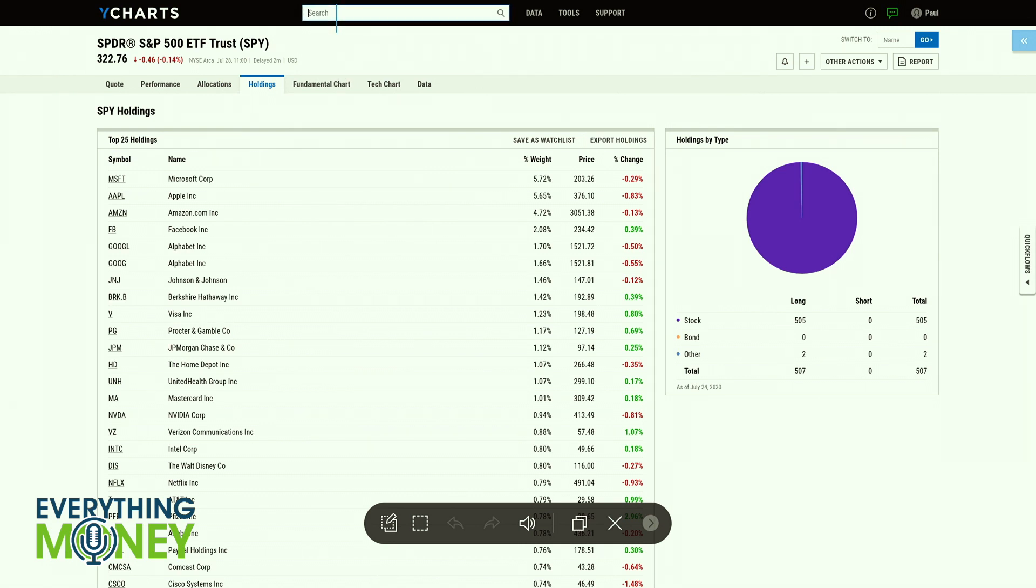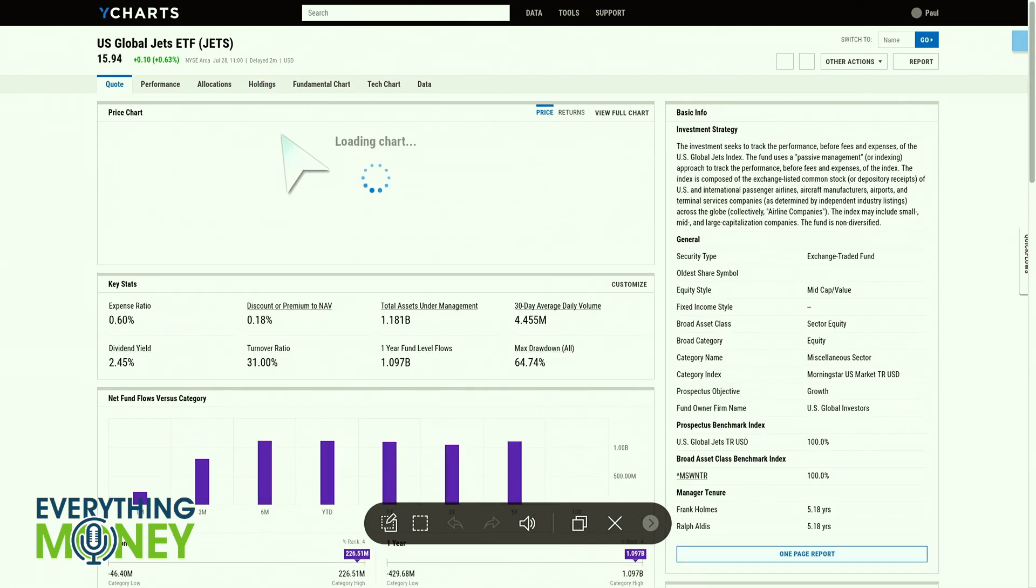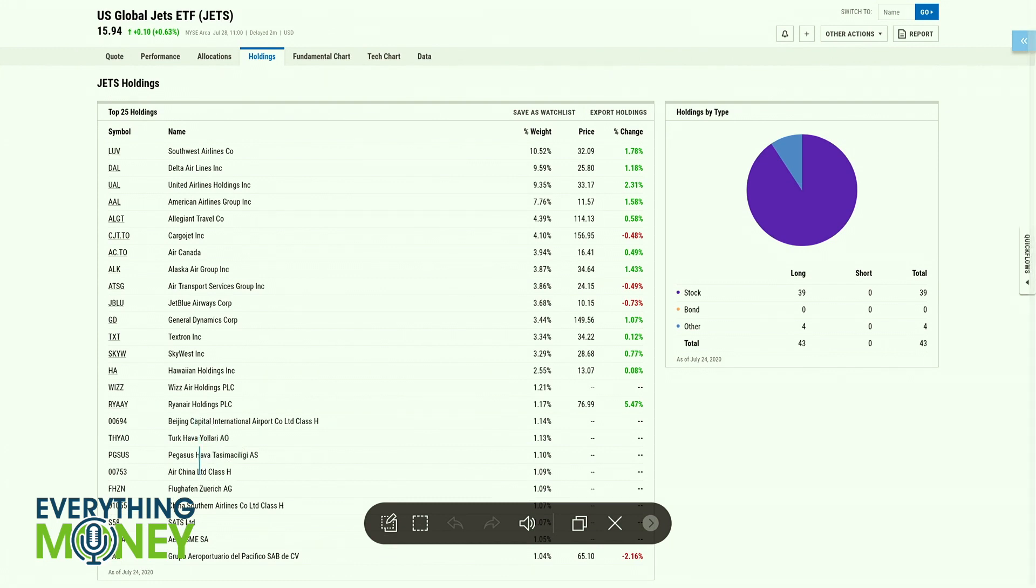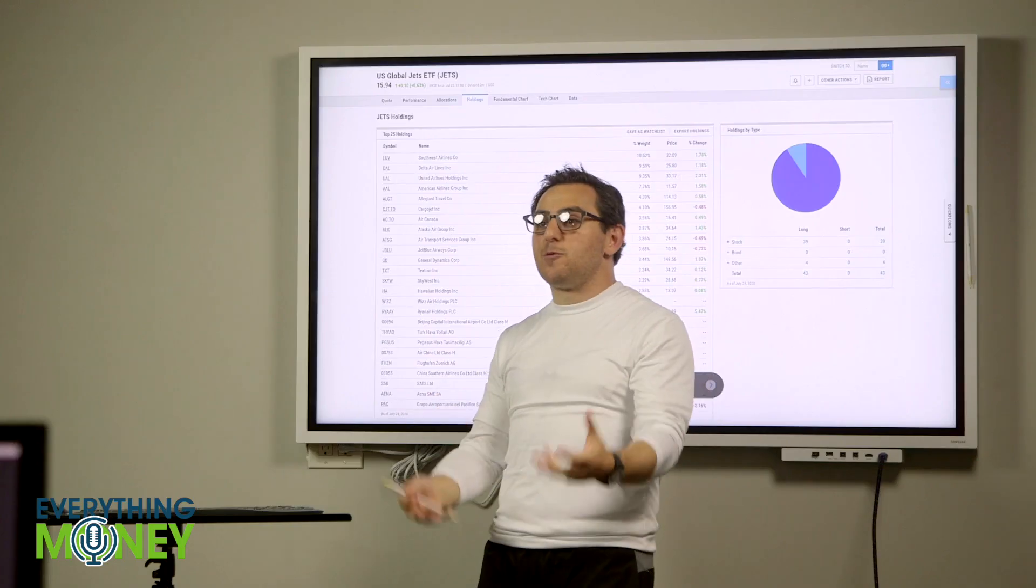So, let's go to a different ETF. Let's go to the airline one. JETS. J-E-T-S. Now, this one has a little bit higher expense ratio. 0.6%. I don't know why. But they're trying to buy companies that are airlines or airline manufacturers. Things like that. So, if you look at the holdings here. Southwest. Delta. Cargo Jet. Alaska Air. General Dynamics. I think Boeing's in here somewhere. China Southern Airline. That's one of the biggest ones in the world. Either way, they're buying all the airline ones.